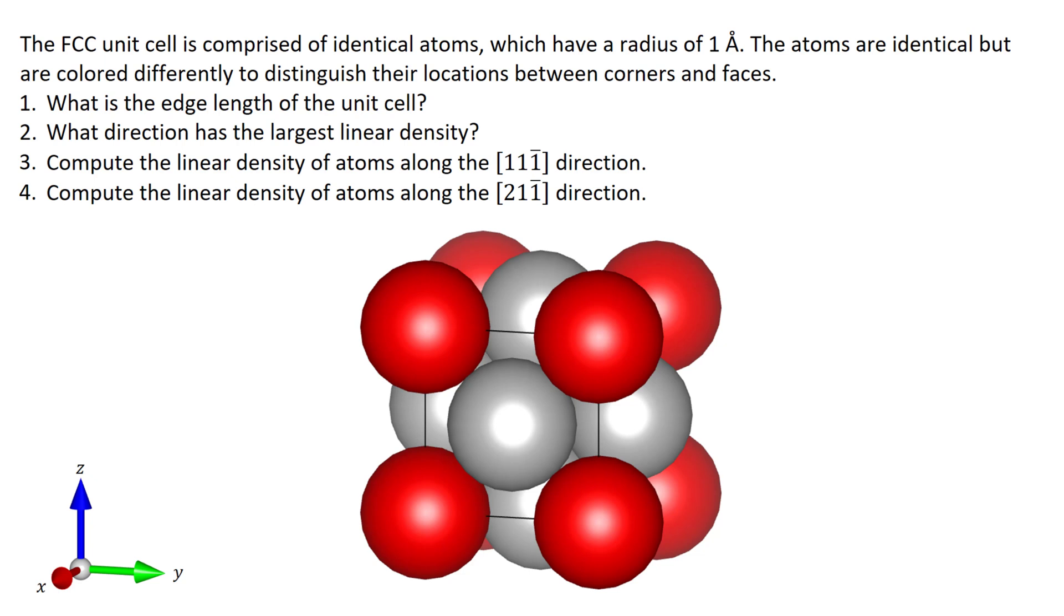Here we've got an FCC unit cell with red atoms on the corners and gray atoms on the faces. All of the atoms are identical except for the colors, and they all have a radius of one angstrom.